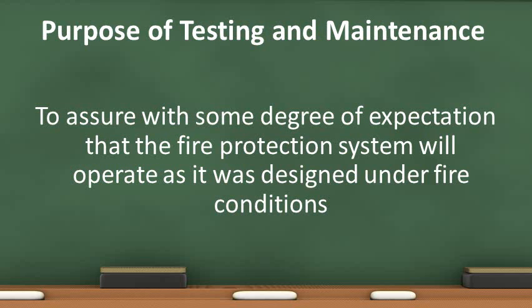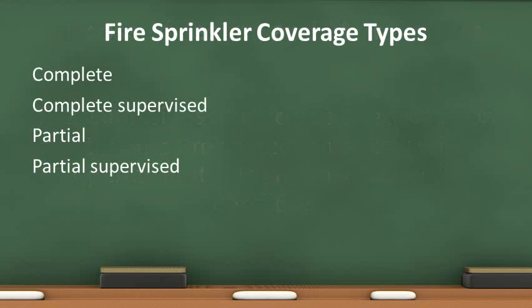Conducting periodic inspections, testing and maintenance will help to ensure the sprinkler system will work as it was designed. There are four types of sprinkler coverage. The type of coverage the building has depends on the occupancy classification and the code in effect at the time it was constructed.